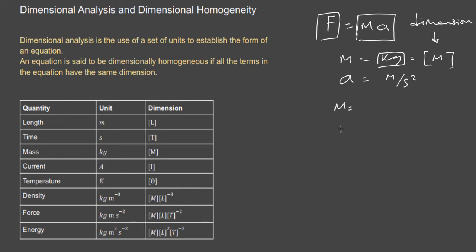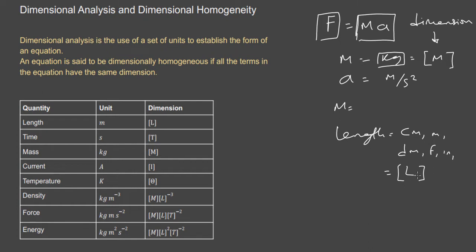Length can be represented as centimeter, meter, decimeter, feet, or inches. Instead of worrying about which exact unit, you just say the dimension of length is L — written as [L] in a square bracket. To represent a dimension, you put the symbol within a square bracket.